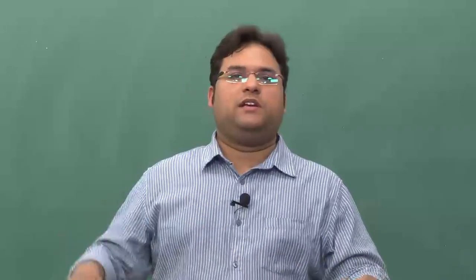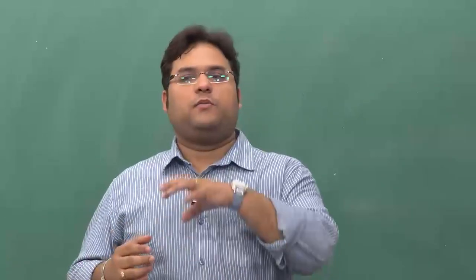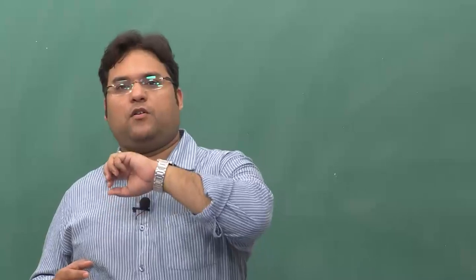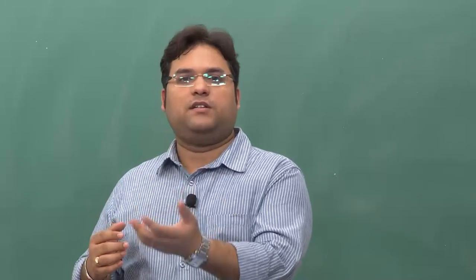For example, you have templates A, B, and C and the input is D — you choose whichever of A, B, or C best matches D based on degree of match. If A matches 65%, the others 20% and 15%, you choose template A. In the strict template matching account, we look for an exact — essentially 100% — match between the stored template and the incoming sensory input.